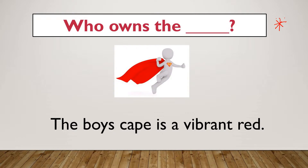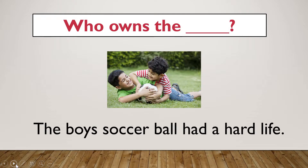Let's have a look at this example: 'The boy's cape is a vibrant red.' Who owns the cape? This boy. So the boy owns the cape — put your apostrophe after 'boy.'